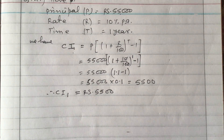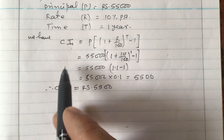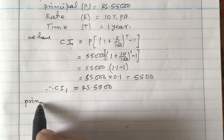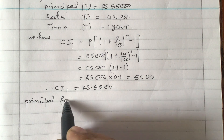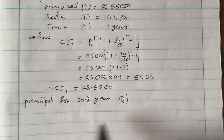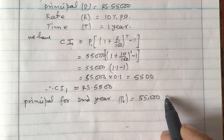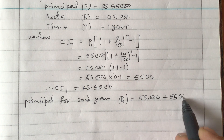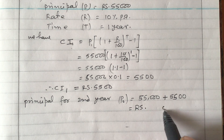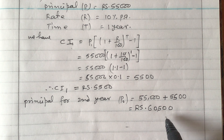Now we need to find the interest for the second year. According to compound interest, the principal changes after every year. The principal for the second year, P2, is the original principal plus the first year's interest: 55,000 + 5,500 = Rs 60,500. So the new principal for the second year is Rs 60,500.